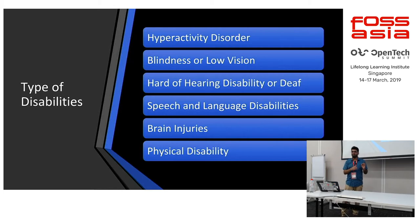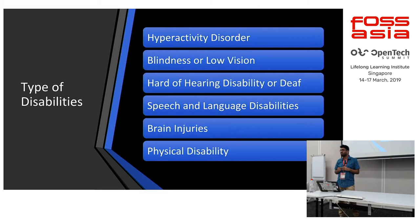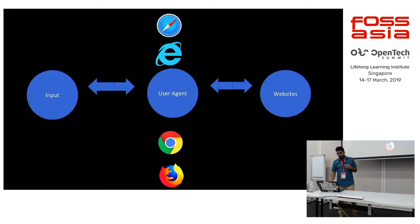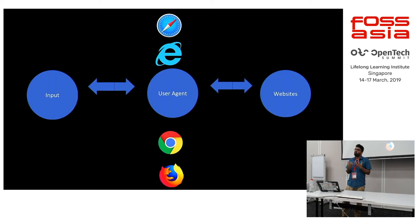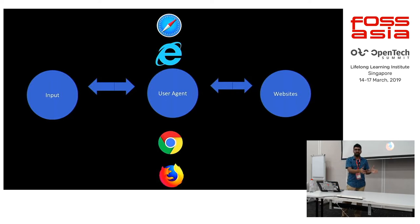These are the specific types of disabilities that most people are facing: hyperactivity disorders, blindness, low vision, hard of hearing, speech and language disabilities, brain injuries, and physical disabilities. We normally focus on user agents — browsers. Every time we're stuck on making a website responsive, we go through Chrome, Mozilla, Safari — and we just care until our browser list ends. But these are not the only user agents.